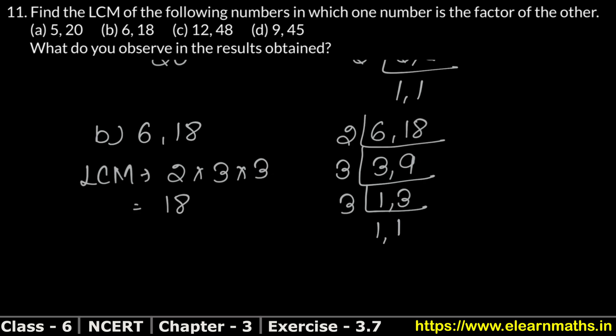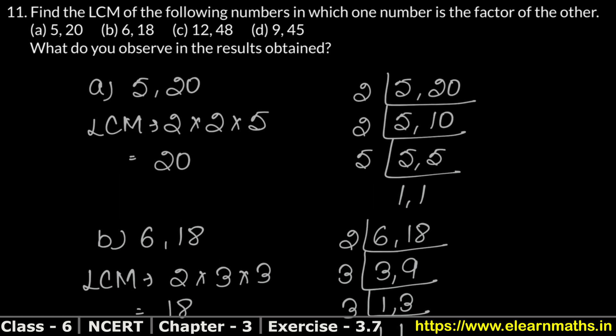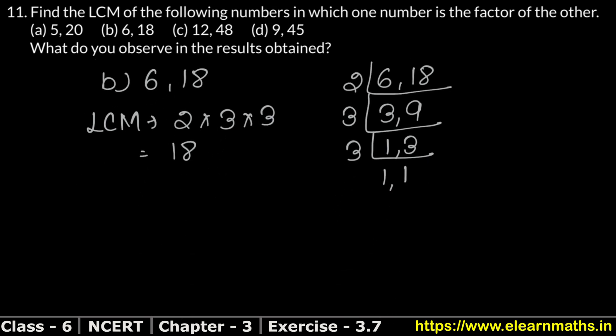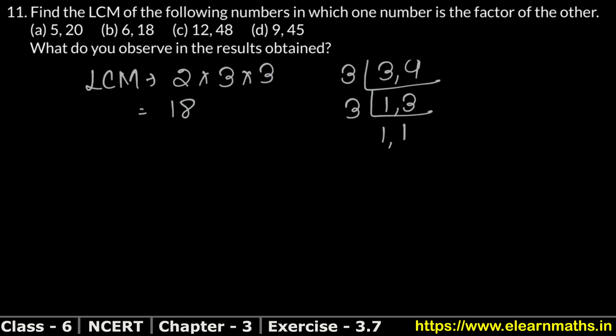If you see the first part, in first part we found LCM of 5 and 20, the bigger value came as 20. Similarly we found LCM of 6 and 18, 18 came. Last two parts also let's see, will the same come - bigger value is coming. If you notice, bigger value is coming in both. C part we'll see, 12 and 48. 48 should come, as we saw in first two parts.